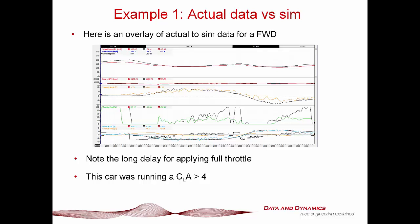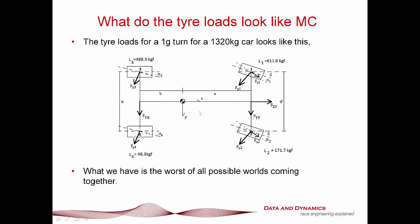If we take a look at a typical overlay between a simulation and actual data for a front wheel drive car — and admittedly this was a race weekend where things were going sideways — look at the throttle trace. Look at just how long it takes to get to full throttle, both in actual (coloured) and simulated (black). This particular car was also running a CLA — downforce coefficient times area — north of about four, which really illustrates the challenge when these two factors come together. It's not ideal, but there are ways to mitigate the damage.